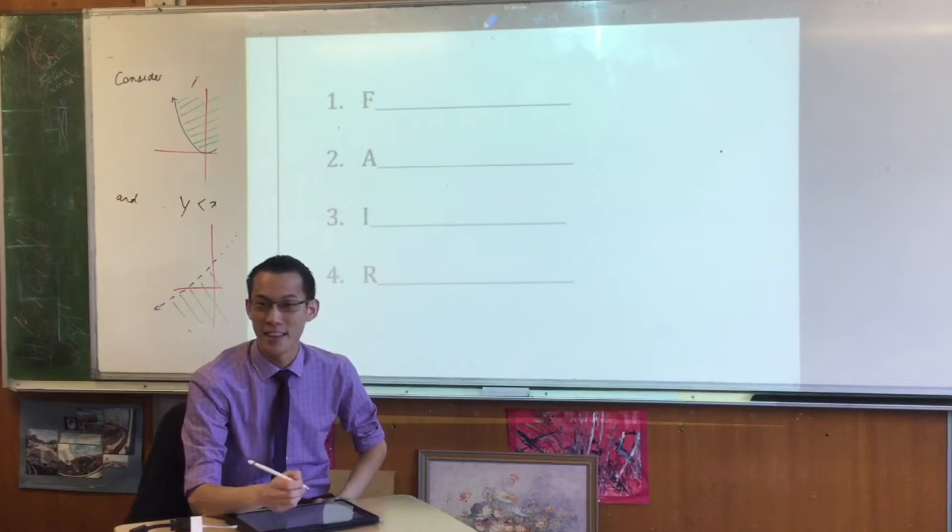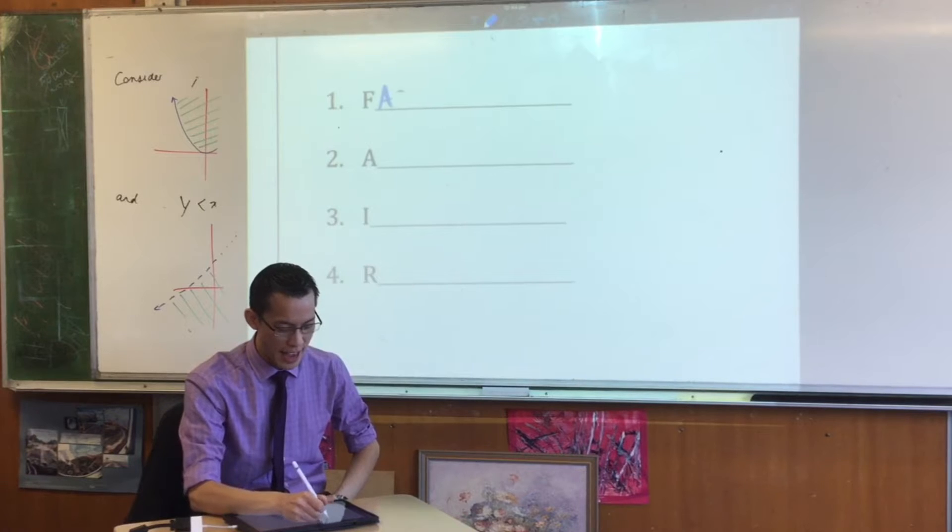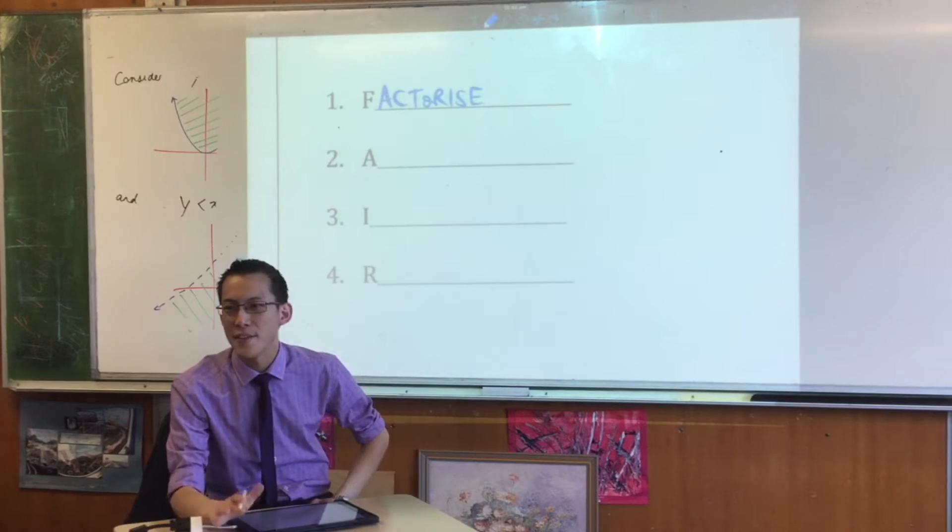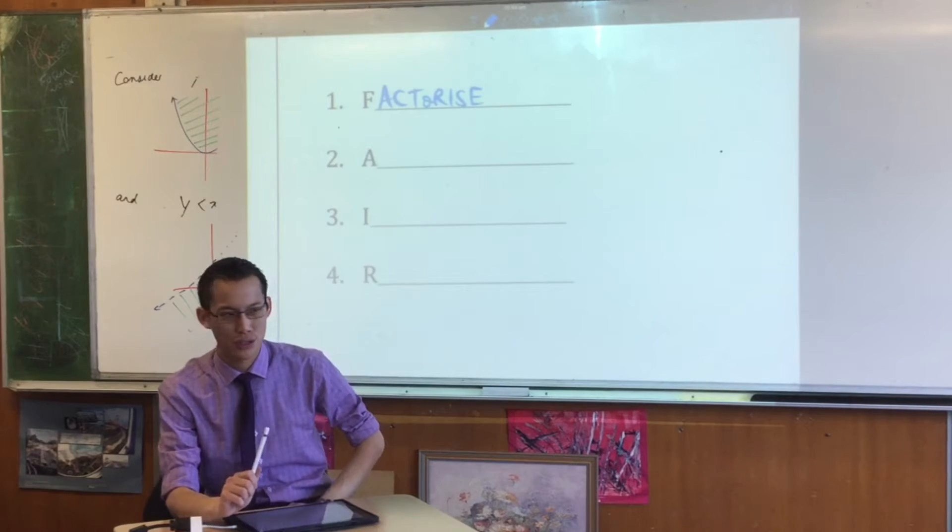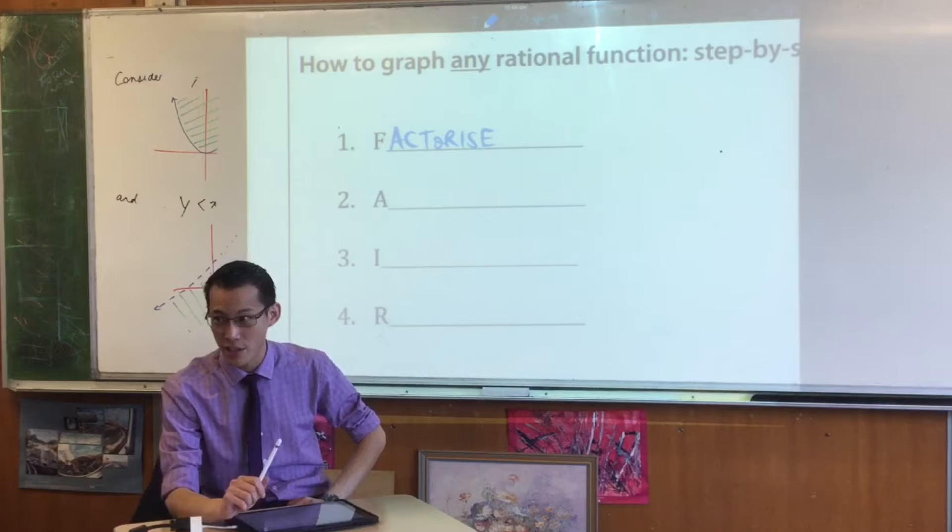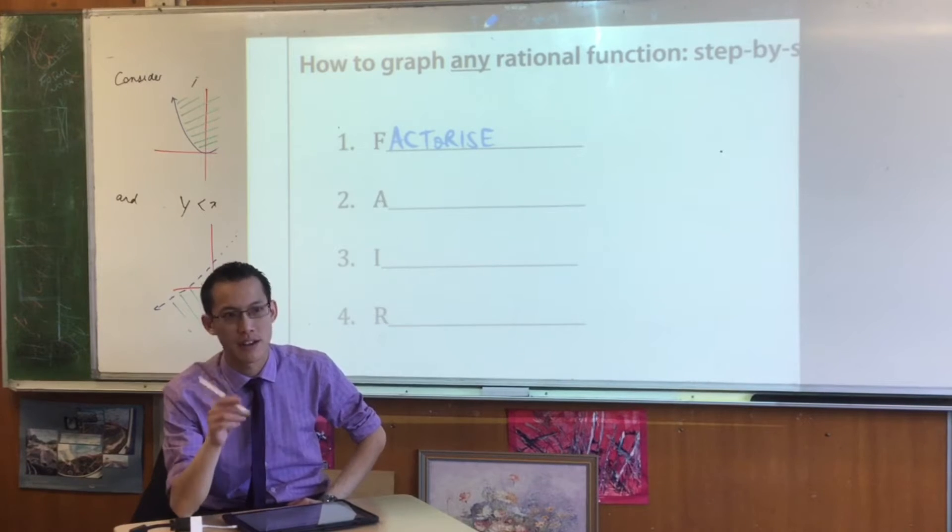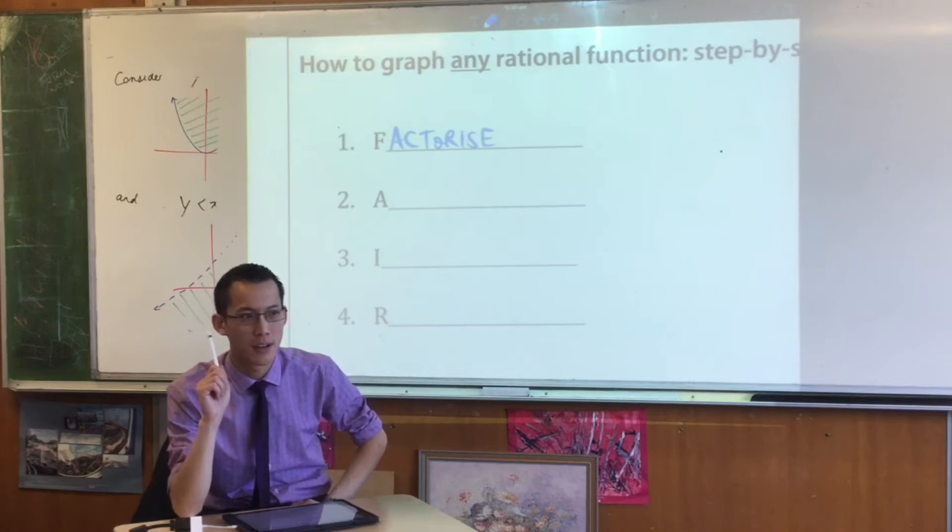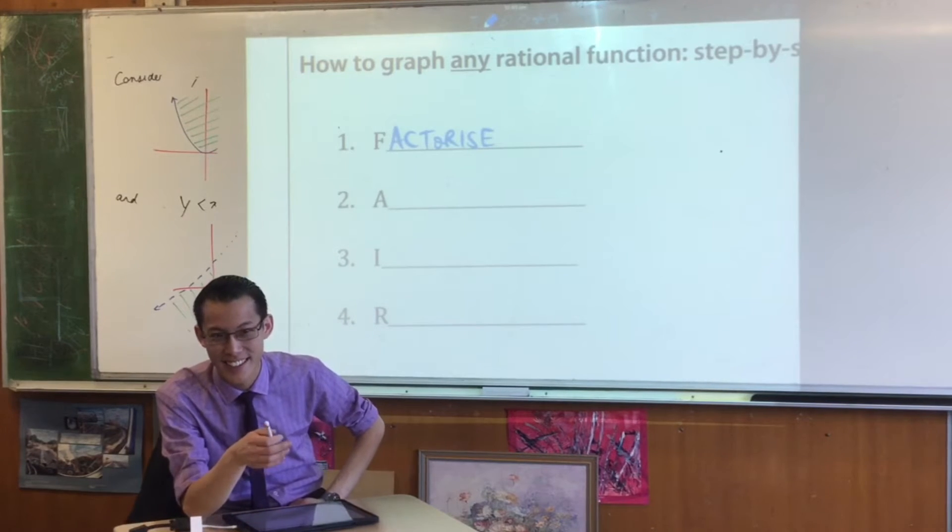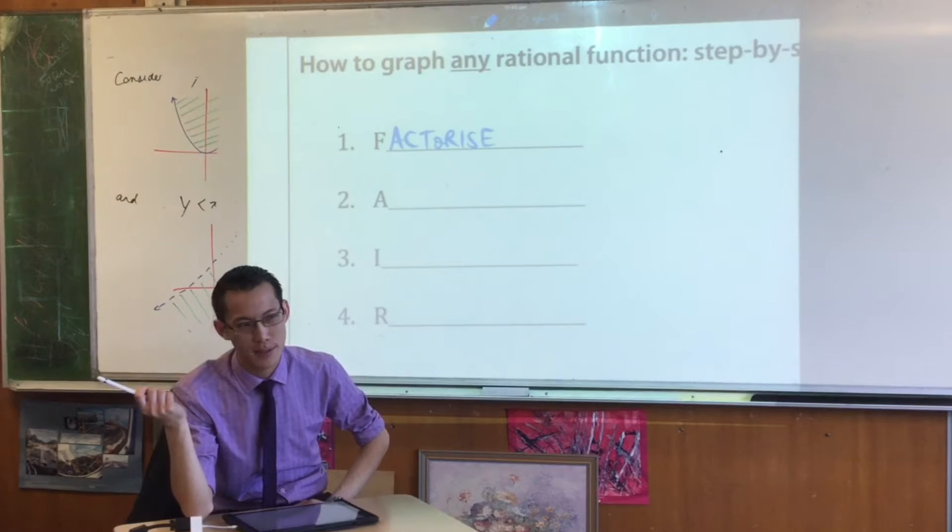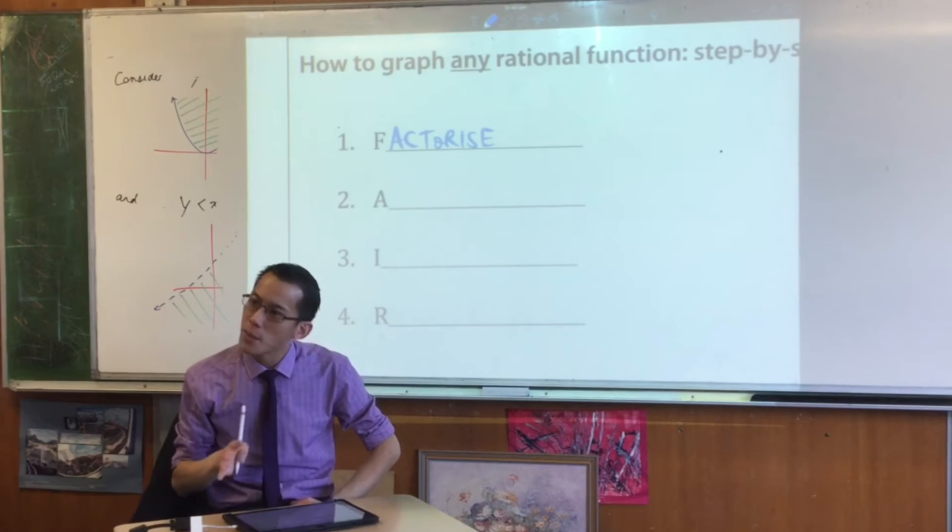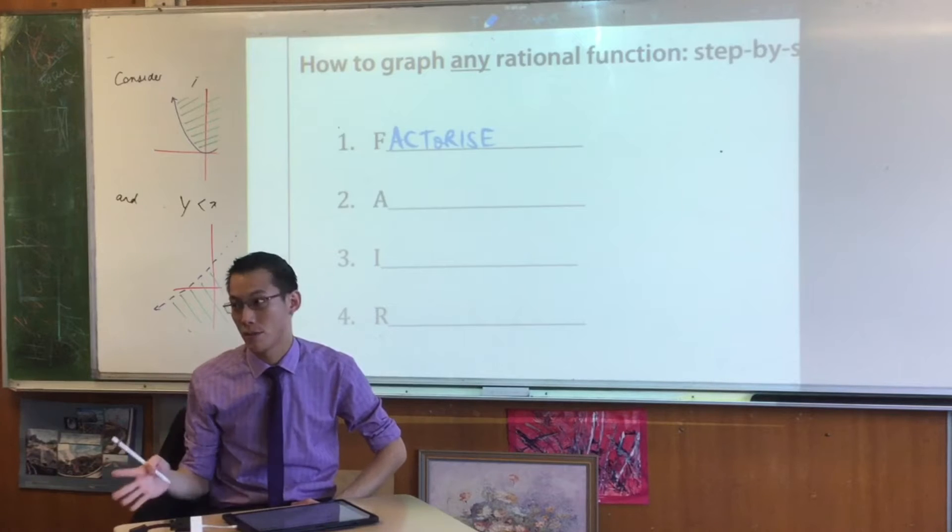What does fair stand for? Let me help you out. The first letter, F, stands for factorized. Now, I gave you a graph in the first place that was already factorized. If it's not factorized, you factorize it. Why is that? Why is factorizing important? Everything gets easier to find. Asymptotes, intercepts, all the region stuff that I showed you before. All of them are easier to find if you have it factorized.